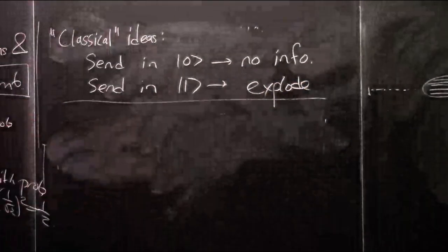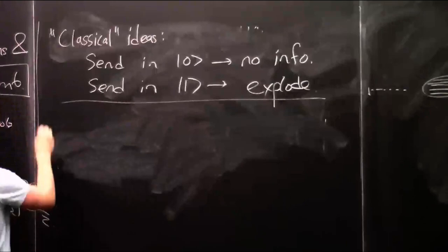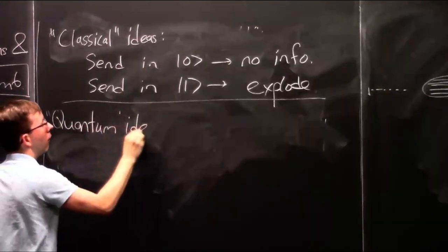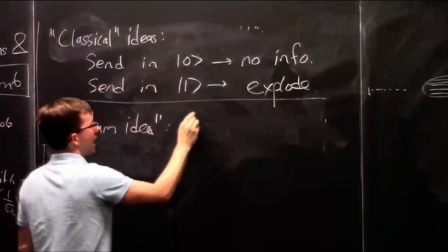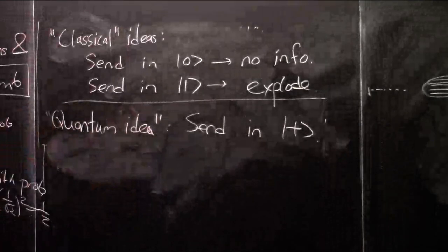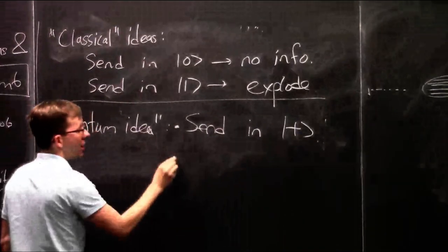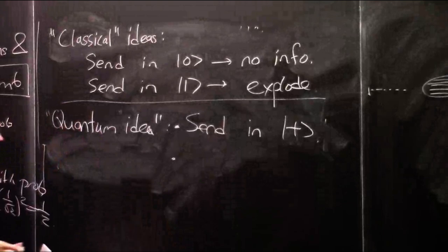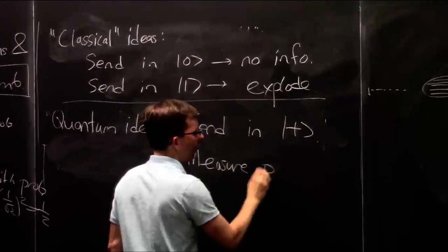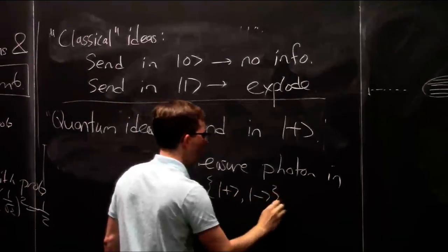Now that you know about quantum states and qubits, you have a quantum idea: you could send in a superposition. How about sending in a photon in the state plus? Assuming you don't explode and a photon comes out, also measure the outcome in the plus-or-minus basis.